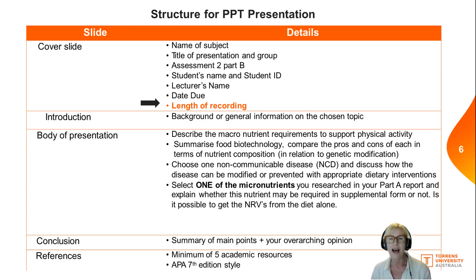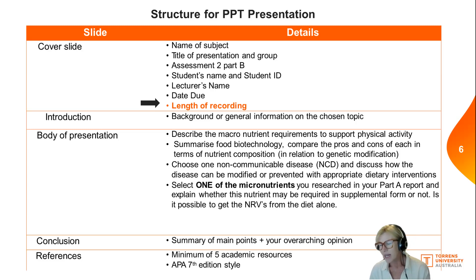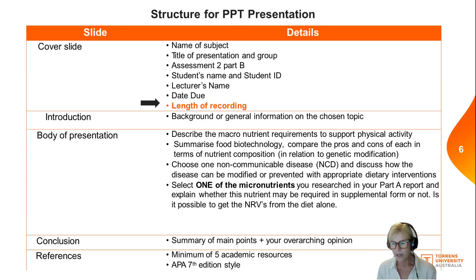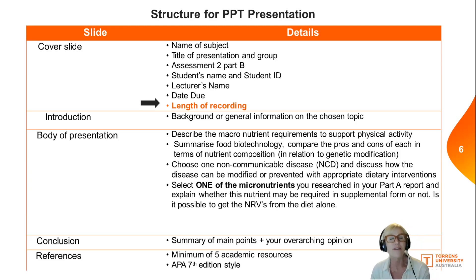You're going to explain whether this nutrient is required in supplement form or whether you can get enough from your diet — can you meet the NRVs? Also consider whether there's a reason you might need more. For example, with vitamin C, if you've got a cold, research has shown that increasing vitamin C even above the NRVs to a therapeutic dose may help your immunity for a short period. Similarly, zinc might be another good one to discuss.